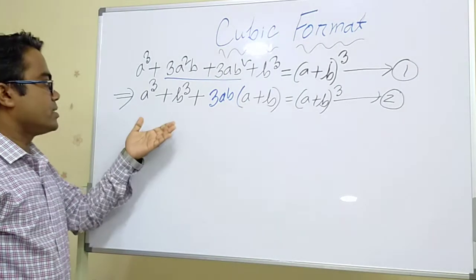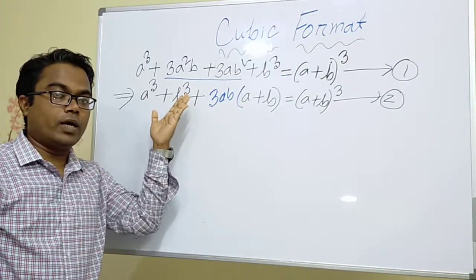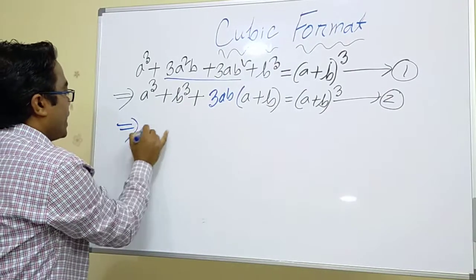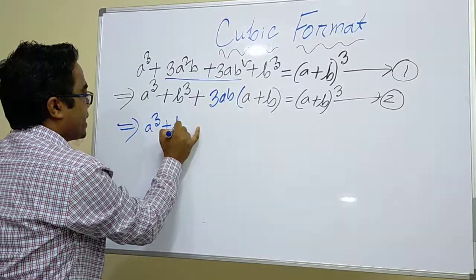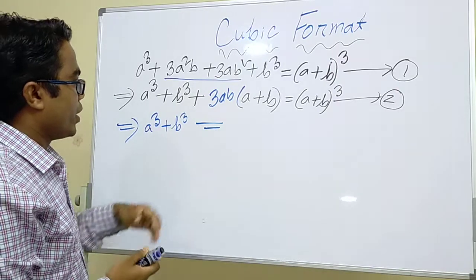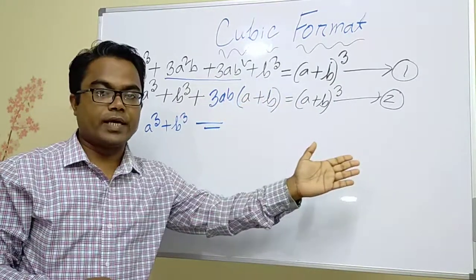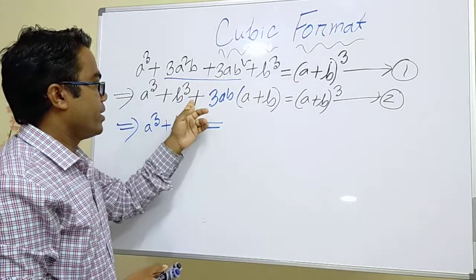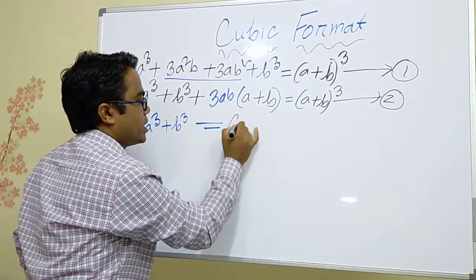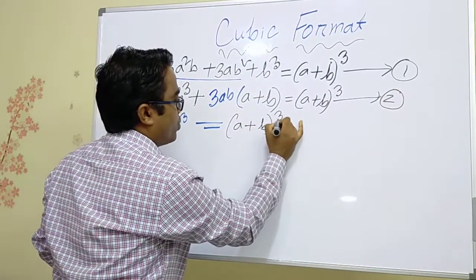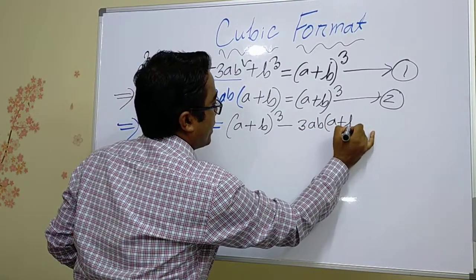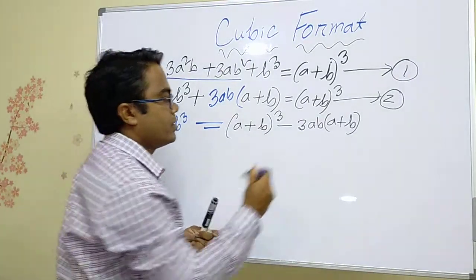Let's see the next slide. If you derive the formula of a cube plus b cube, we get a cube plus b cube equals — if we move terms from the left side to the right side, the plus sign changes to minus. So we can write (a + b) whole cube minus 3ab into (a + b). This is equation number 3.